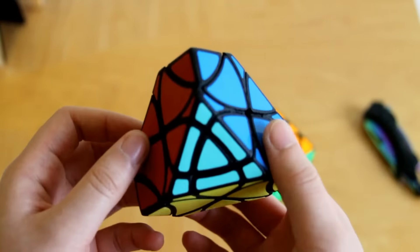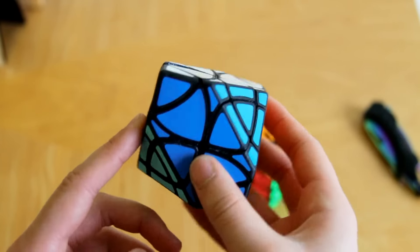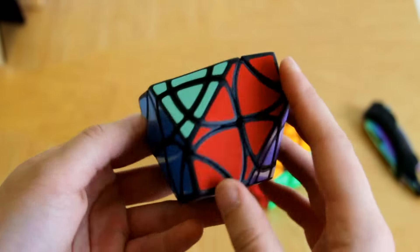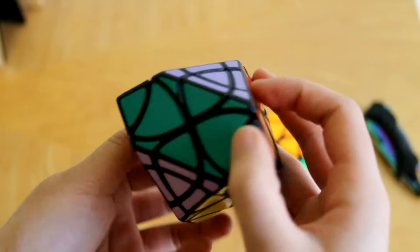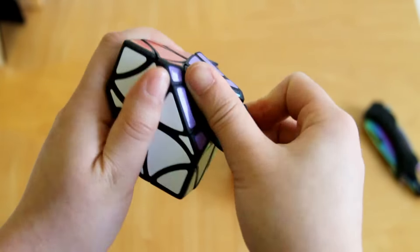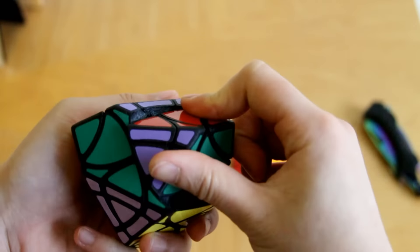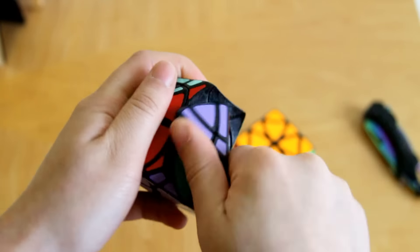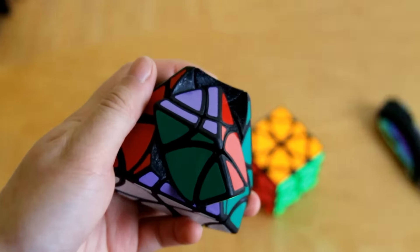I believe this one was designed by Ogre Cubes but it was printed by Chewy's Custom Stickers and I also chose this color scheme which I think looks really great. Let's just go ahead and turn this thing and see how it moves. It definitely feels stiff and a little bit sluggish.